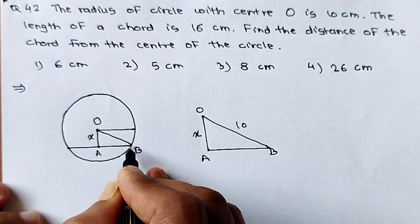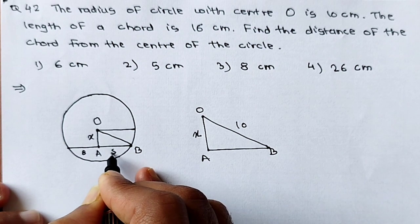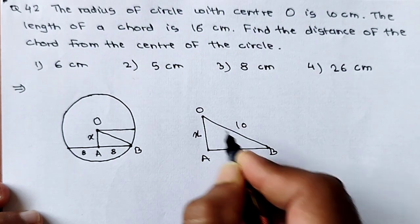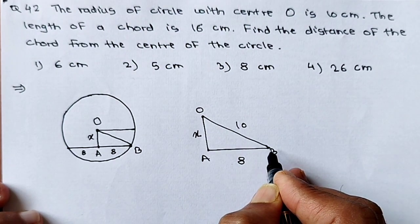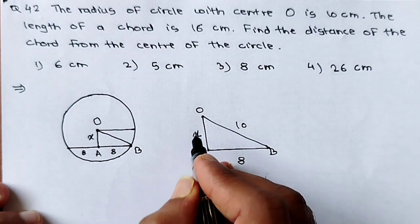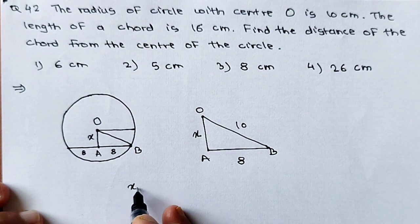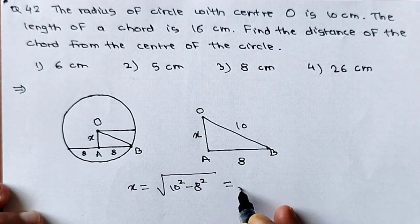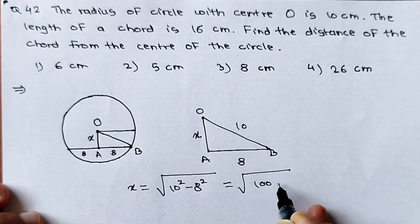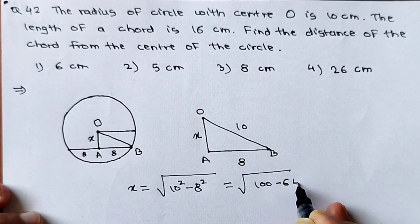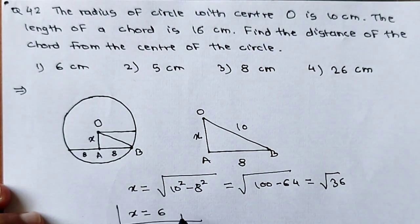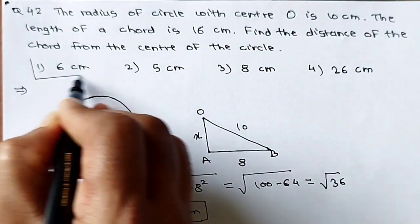We have to calculate distance X. We know OB is the radius, so OB is 10 centimeter. Total chord length is 16, so it will be 8 and 8 — distance A to B will be 8. Using the Pythagoras theorem, X equals square root of 10 squared minus 8 squared, that is square root of 100 minus 64, which is square root of 36. We get X equal to 6. So 6 centimeter is our correct answer, which is option 1.